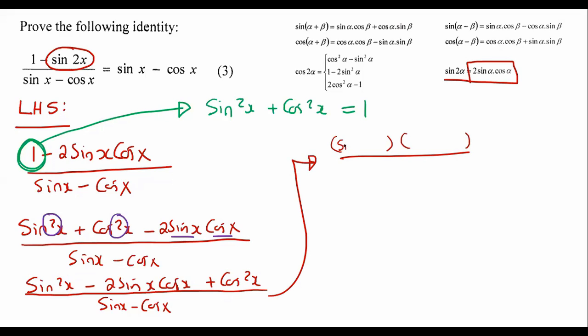And it will become sin x and sin x cos x and cos x, and then a minus and a minus. If you had to multiply that out, you would see that it will eventually give you this part at the top.